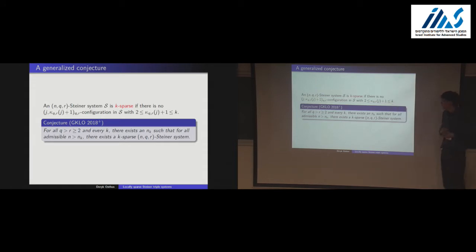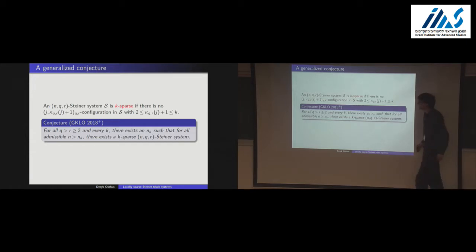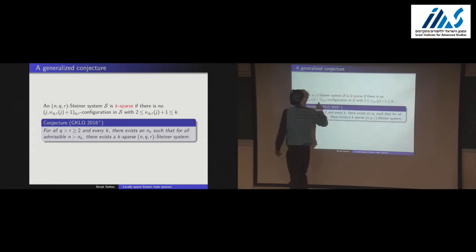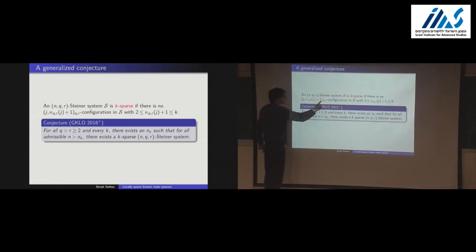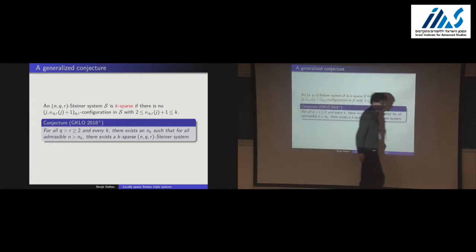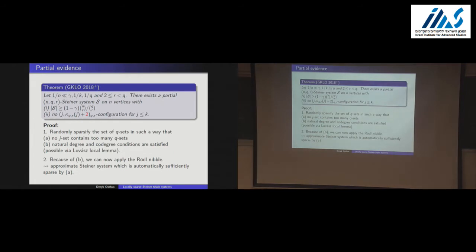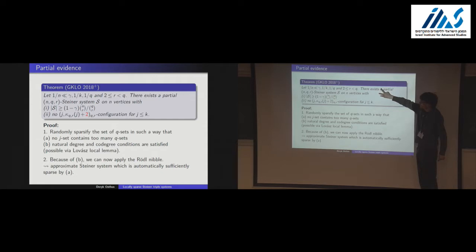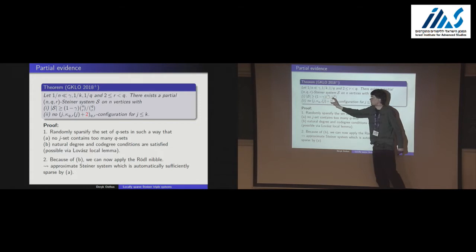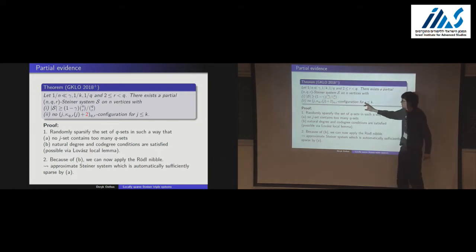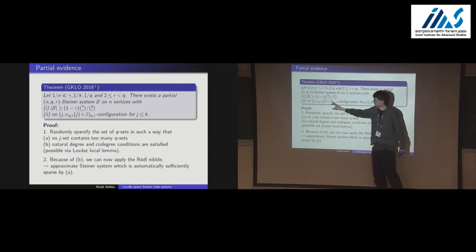We have some evidence for this. It's easy to prove that if instead of plus 1 you put plus 2, then it's almost true. Here's a result: you can get an approximate Steiner system — almost a full Steiner system in terms of the number of Q-sets — with no plus-2 configuration inside. This says nothing about forbidding the Pasch configuration itself, but it does forbid some configurations.